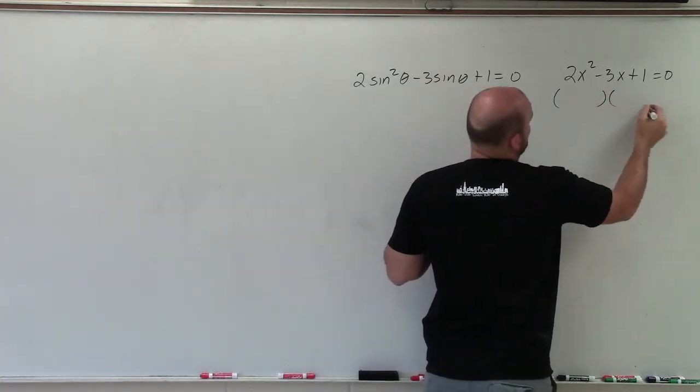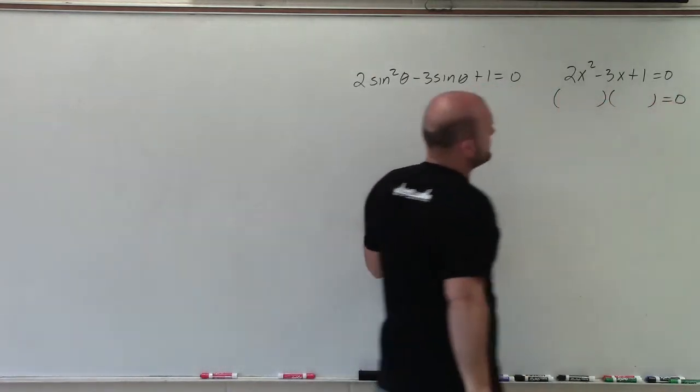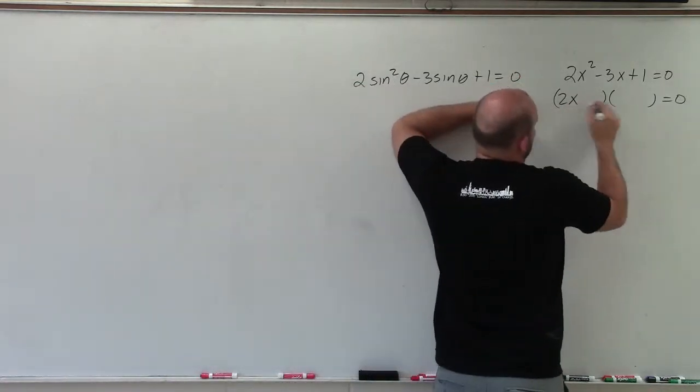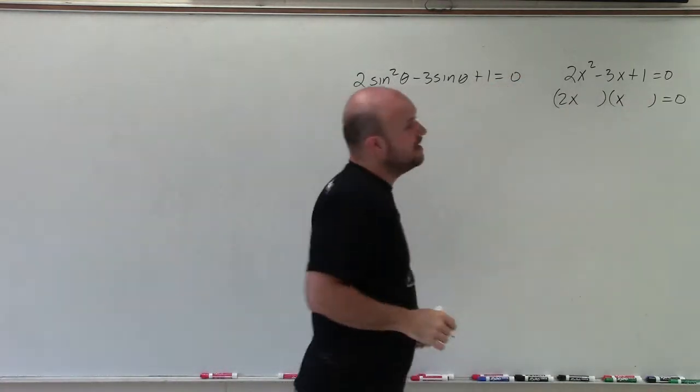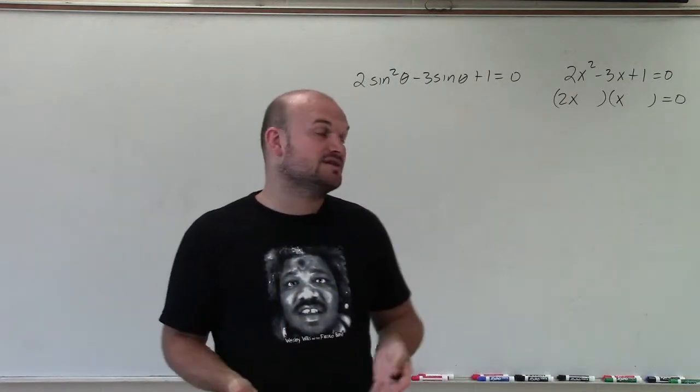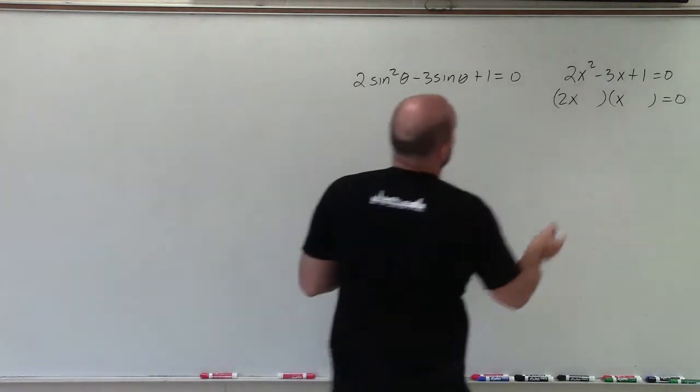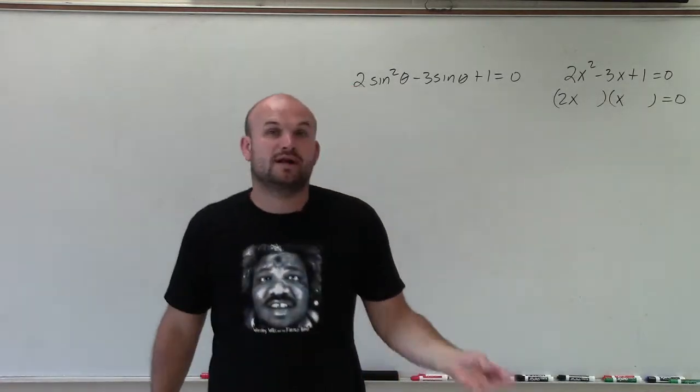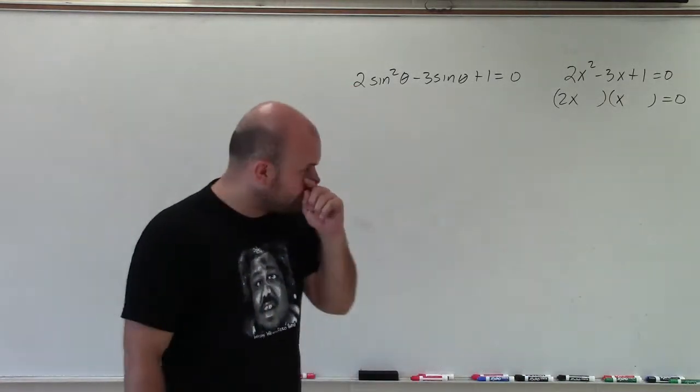Factoring is setting up a product of two factors. The product of two factors have to multiply to 2x, so that's easy: 2x and x. And they also have to multiply to 1. So that could be 1 and 1, or negative 1 and negative 1.